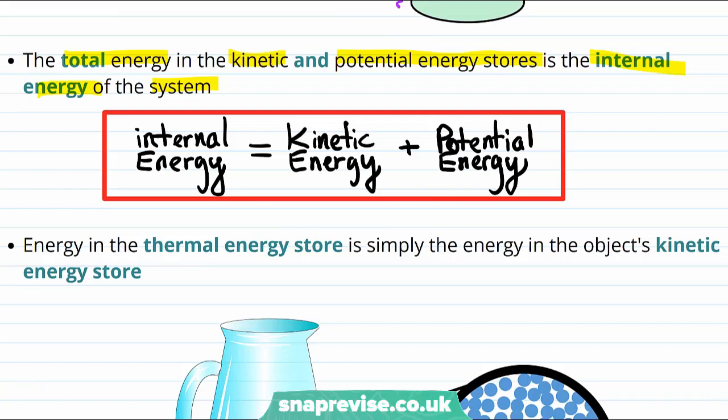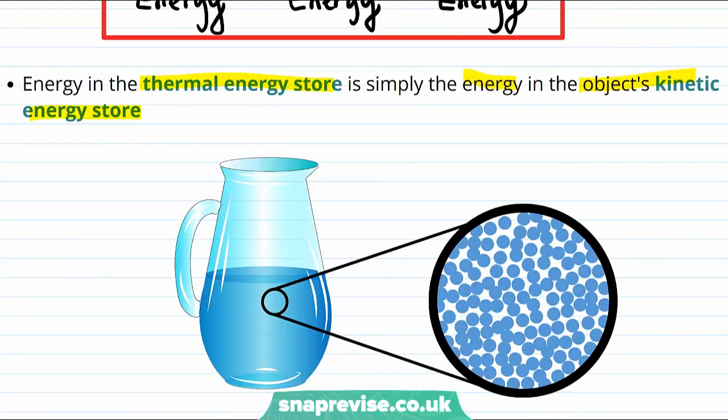Now something that's quite interesting is that it turns out when we talk about thermal energy, or we're talking about the heat of a substance, we're just talking about how much kinetic energy its particles have. So energy in the thermal energy store is simply the energy in the object's kinetic energy store. So what we're saying is that how hot this bit of water is, is all to do with just how fast the particles in the substance are moving.